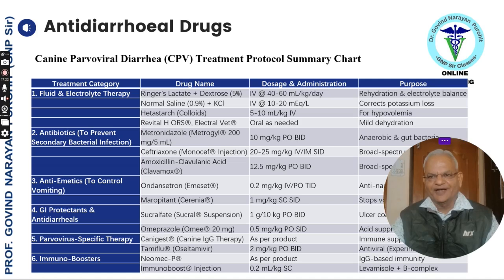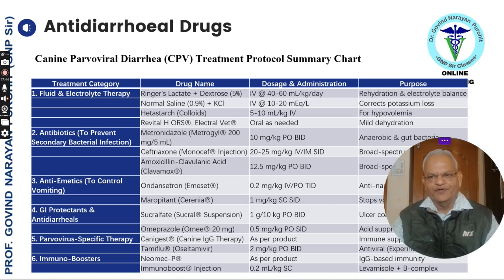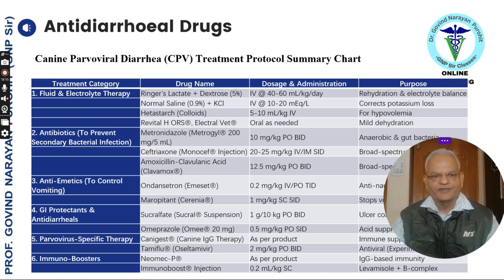When the problem in young pups is canine parvovirus diarrhea, there is a list of drugs to use — the table shows the drug name, dosage and administration, and purpose. When the animal is severely ill, it should be hospitalized for 3 to 7 days, and a combination of all these drugs can be used to treat canine parvovirus. One should use fluid and electrolyte therapy, antibiotics, antiemetics, GI protectants and antidiarrheals, parvovirus-specific therapy, and immunoboosters to save pups from parvovirus diarrhea.